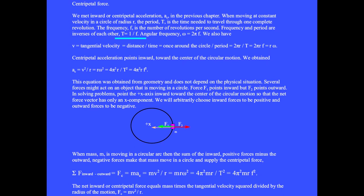T equals 1 over F. Angular frequency ω equals 2πF. We also have tangential velocity V equals distance over time. When the distance is once around the circle, then the time is one period. V equals 2πR divided by T, or this could be written as 2πRF or Rω.